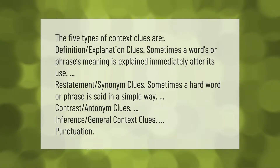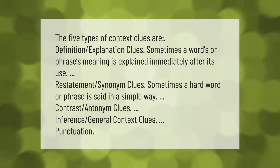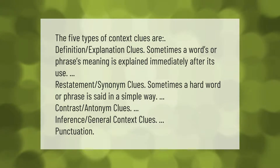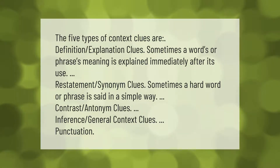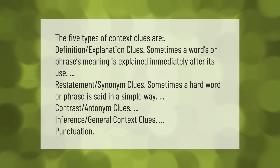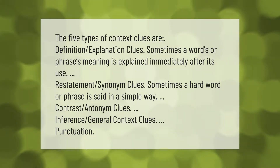The five types of context clues are: definition/explanation clues — sometimes the word or phrase's meaning is explained immediately after its use; restatement/synonym clues — sometimes a hard word or phrase is said in a simple way; contrast/antonym clues; inference/general context clues; and punctuation clues.